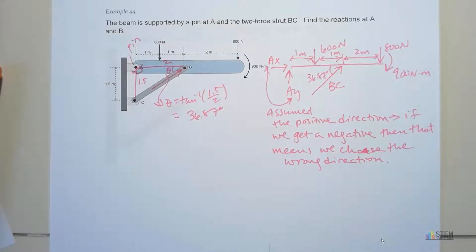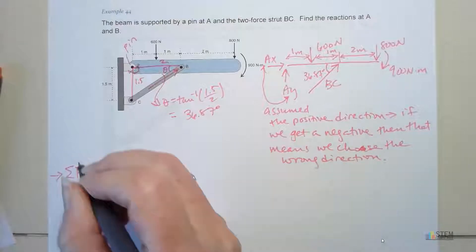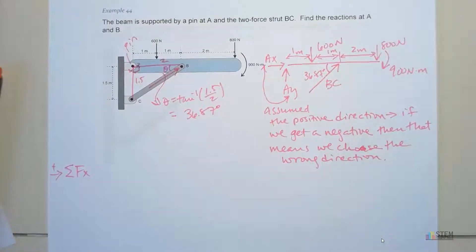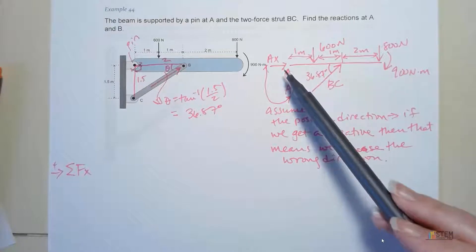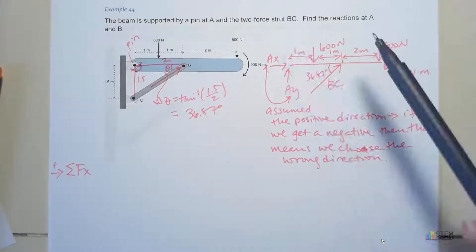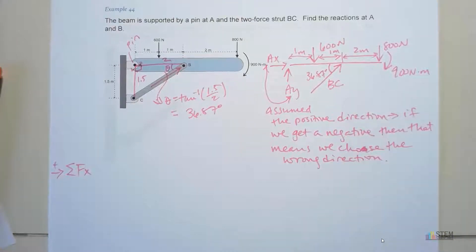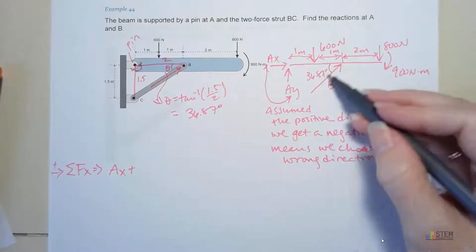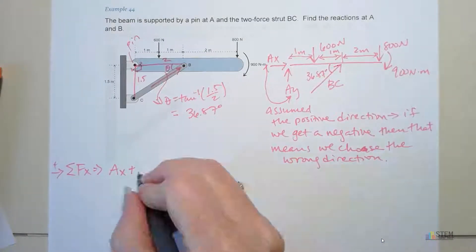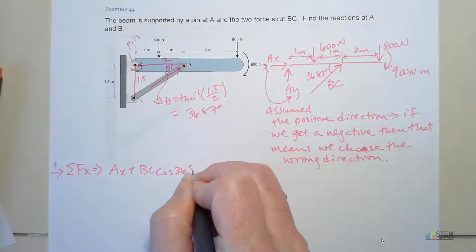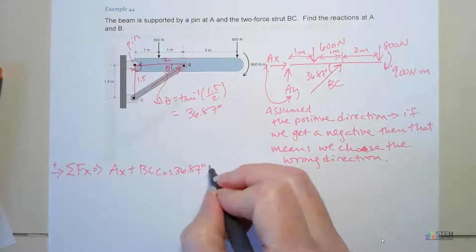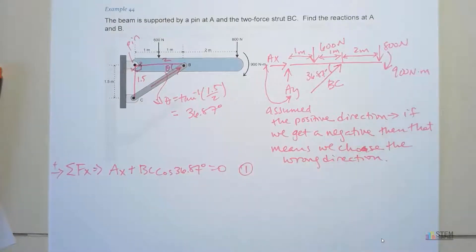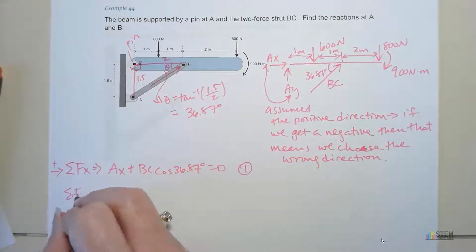We want to look at the forces. I'm going to say to the right's positive in the X direction. Our components in the X direction, we've got this AX. And then we've got an X component here due to BC. AX plus BC cosine 36.87, and that needs to be set equal to zero. Let's call this equation one. Can't do anything with that because we have two unknowns. We need more equations.